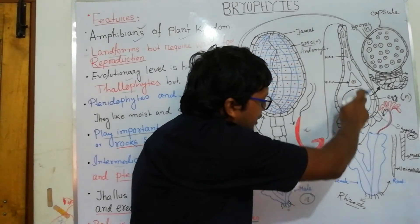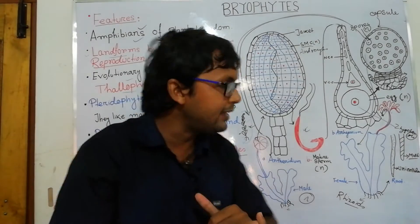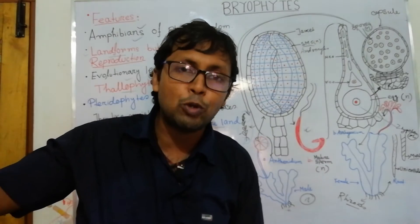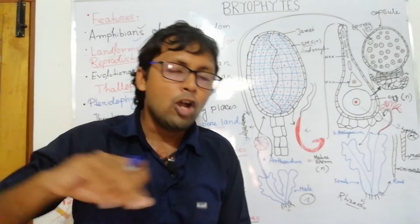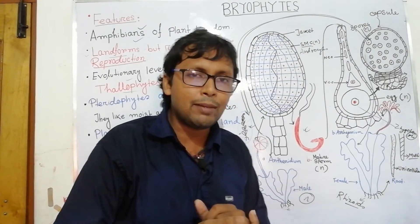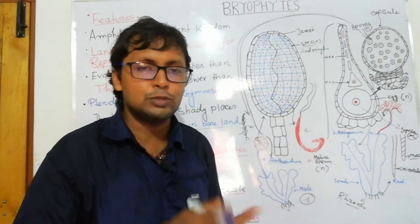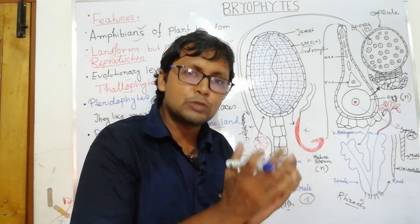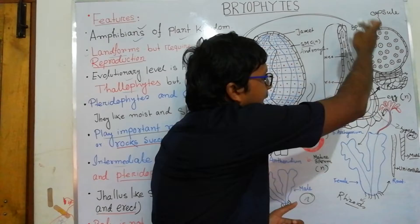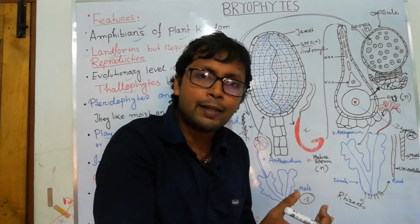The egg is haploid. After fusion of the antherozoid and egg, a diploid structure — the zygote — is formed. The zygote starts the sporophytic body. From the zygote, an embryo develops, and from the embryo, the sporogonium structure — the sporophytic body — develops.